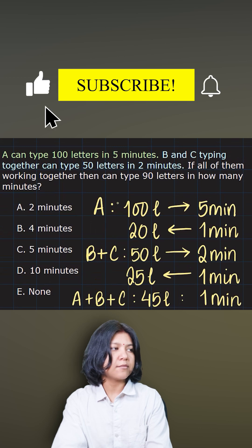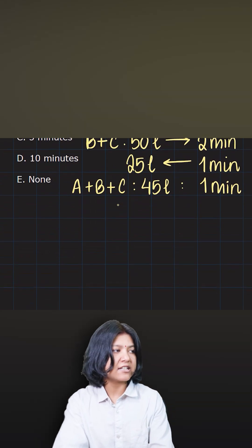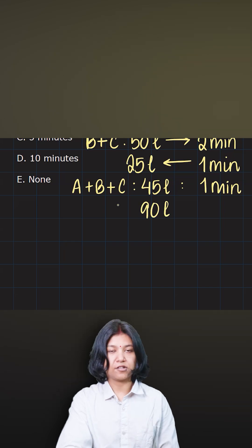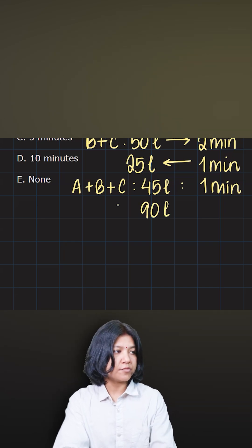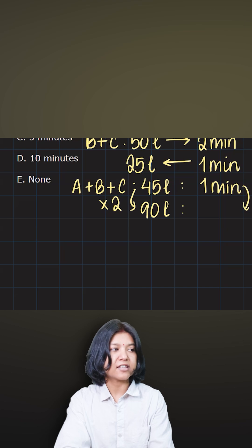And now question is asking me, by working together, how many minutes will they take to cover 90 letters? So to type 90 letters, the logic is very simple. You know that 90 is simply double of 45. So they will definitely take double number of minutes, which is just 2 minutes.